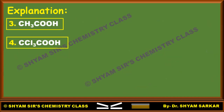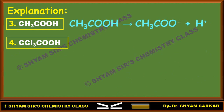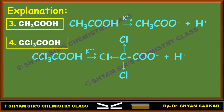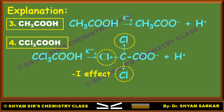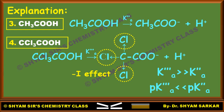Now let us look at the other two molecules: acetic acid with dissociation constant KA double prime, and trichloroacetic acid. In trichloroacetic acid's conjugate base, three Cl groups withdraw electrons and cause more H⁺ to dissociate compared to acetic acid. Therefore, KA triple prime is much much greater than KA double prime, and accordingly pKa triple prime is much much less than pKa double prime.